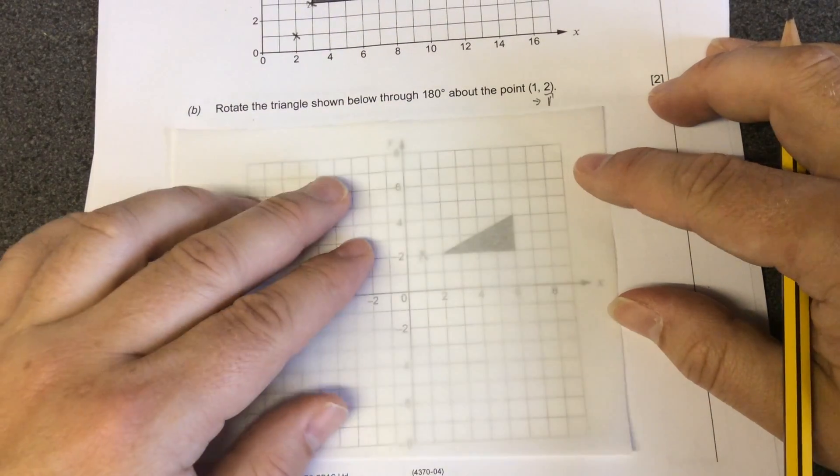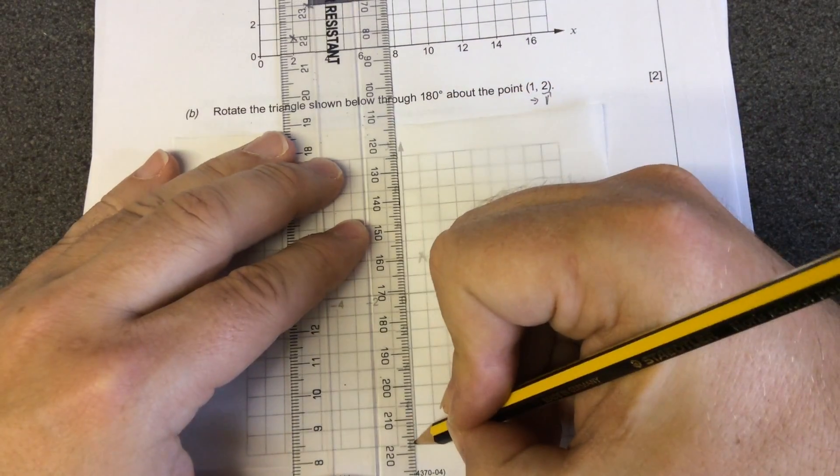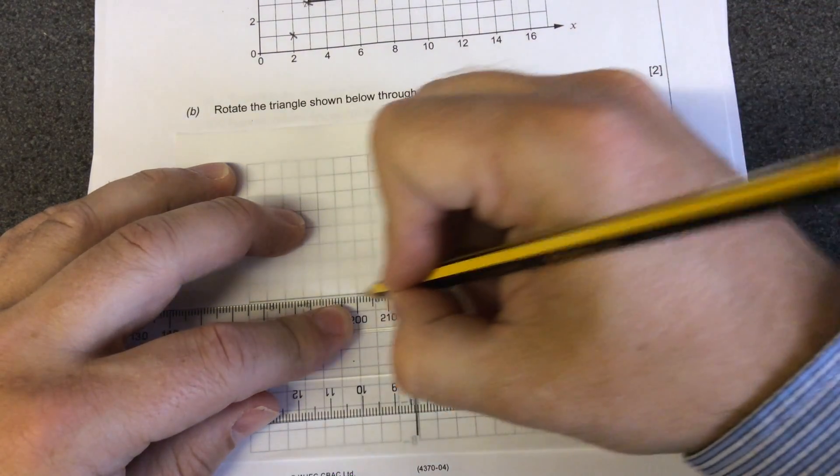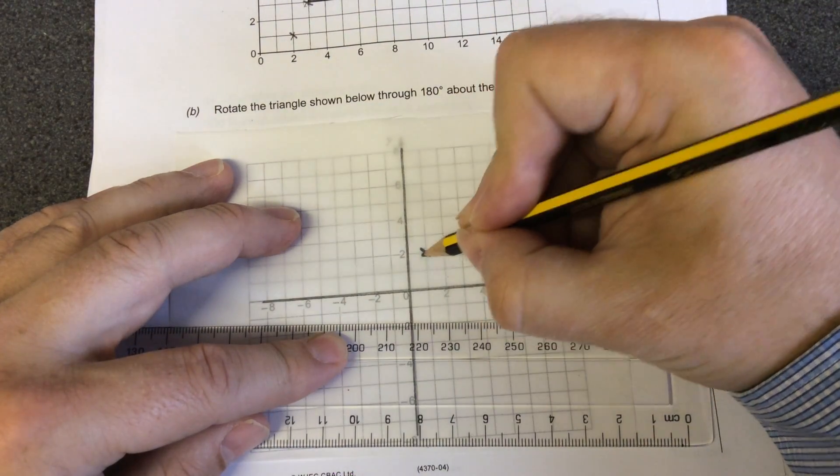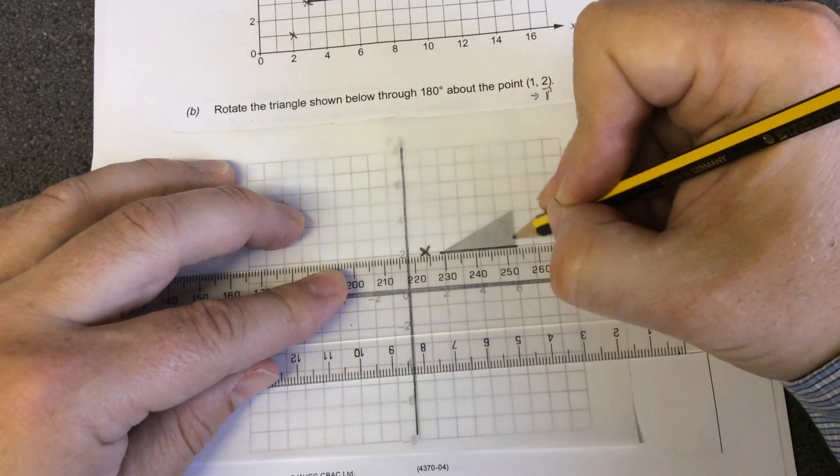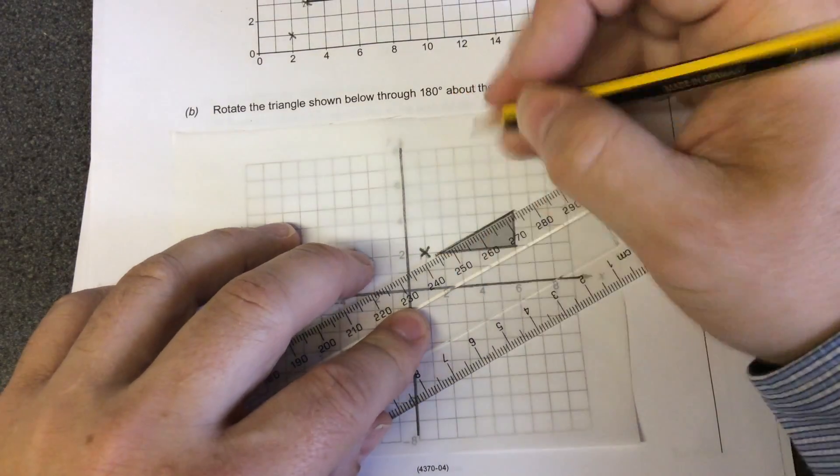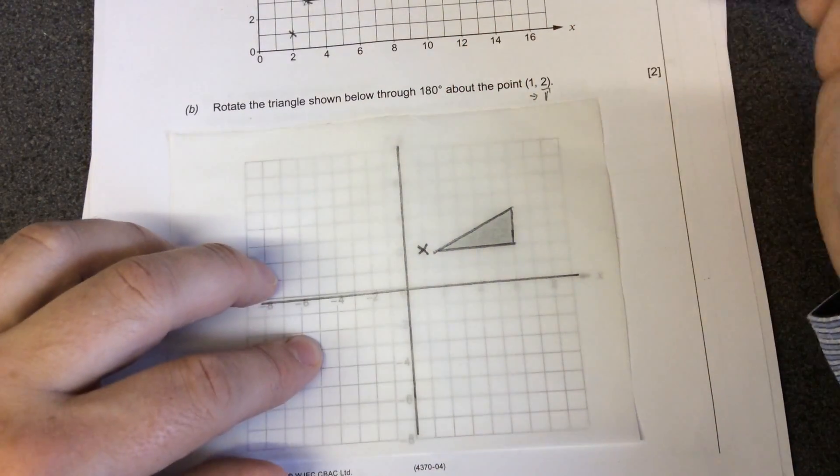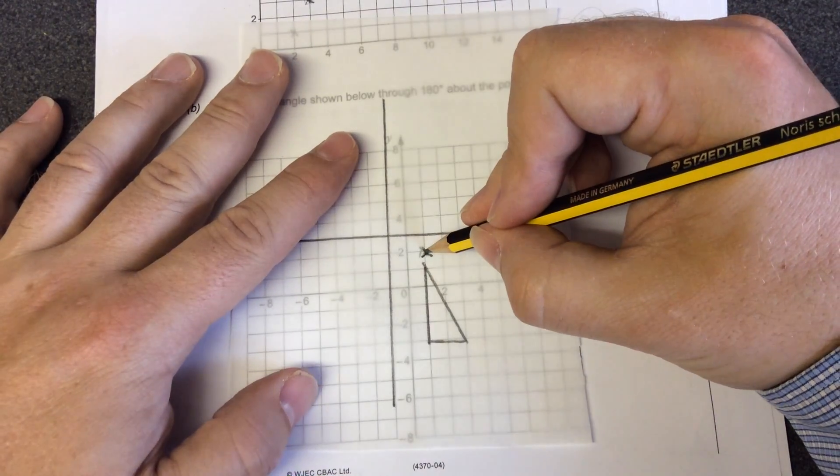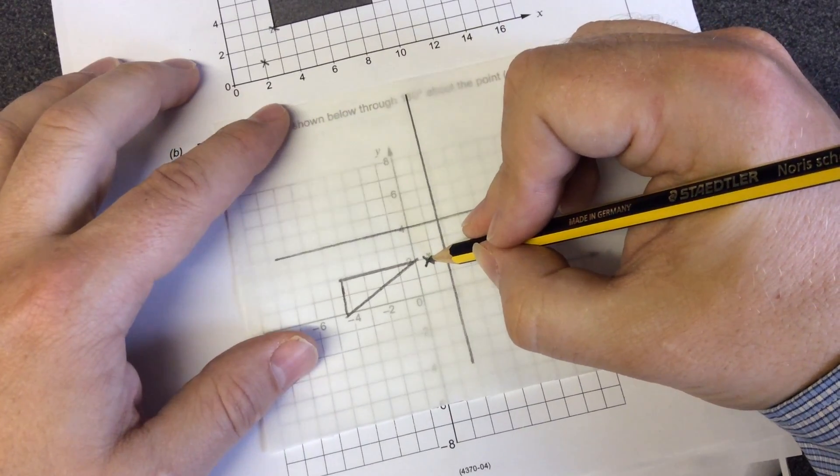What you would do then is with tracing paper, sketch the axis. You would then, once you've sketched the axis, mark the point where you're rotating about. Draw the shape, the triangle, onto your tracing paper. And then you're rotating it 180 degrees. 90 degrees would be a quarter of a turn. And then 180 would be half a turn.